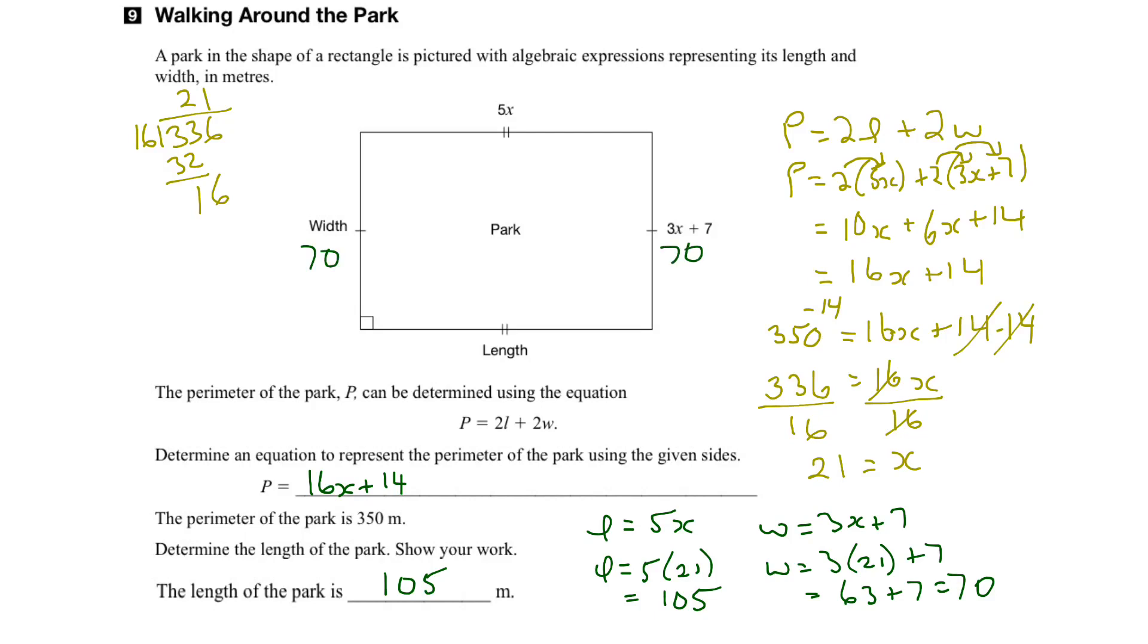And similarly, we know that the length, which is this part here and this part here, they're going to be the same based on these markings, will be 105 meters. So we can put that in. So this would be 105, and this would be 105.